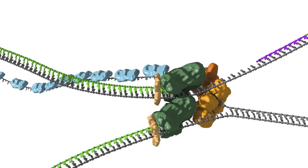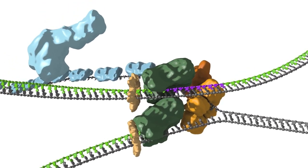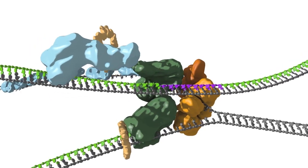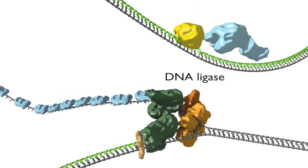Once the lagging strand polymerase reaches the RNA primer from the upstream Okazaki fragment, the lagging strand loop is released, and Okazaki fragment maturation and ligation by polymerase 1 and DNA ligase occurs.